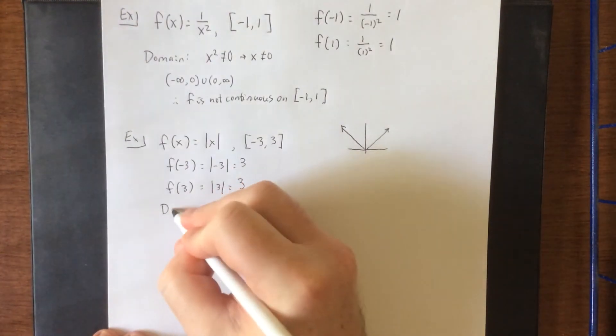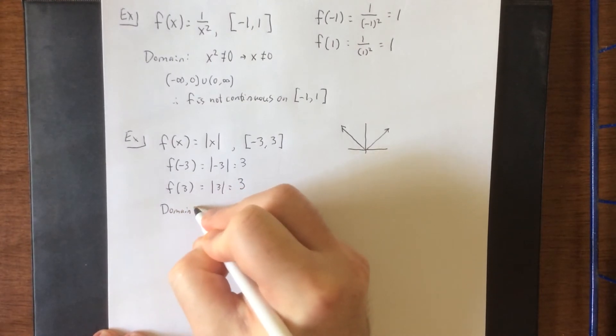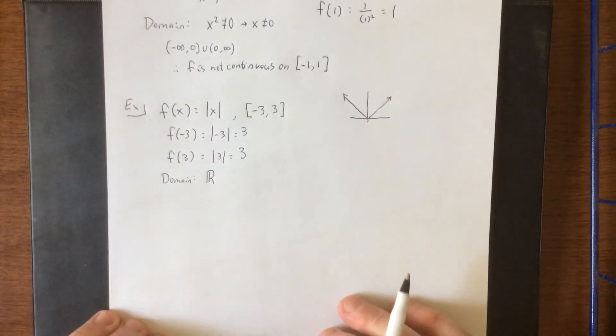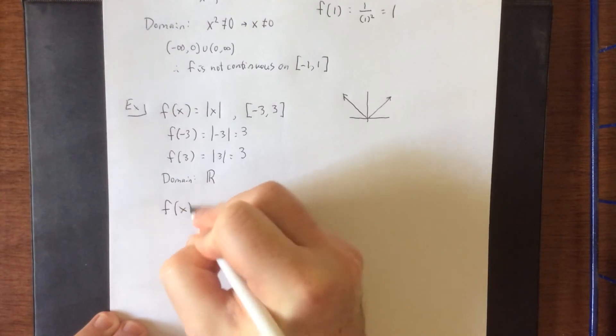Additionally the domain of the absolute value function is all real numbers and it is continuous on its entire domain. So if the first hypothesis works out and the last hypothesis works out, that means that we're going to encounter an issue with the second hypothesis.